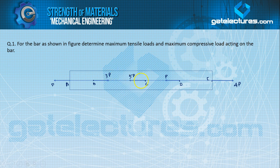First, let us see what we have to find in this question: maximum tensile load and maximum compressive load acting on the bar. This bar is not under pure axial loading. According to the pure axial loading definition, loads are applied only at the extreme ends, so the complete bar throughout the length has equal loading at every cross section — the load will be constant throughout the length of the member. But in this diagram, the load will not be constant throughout the length of the bar.